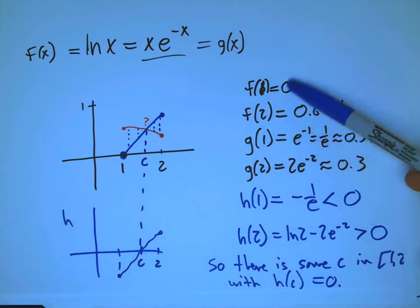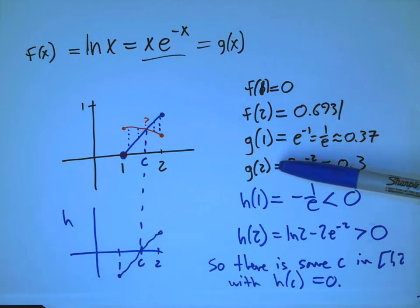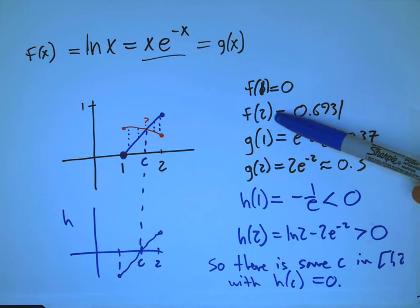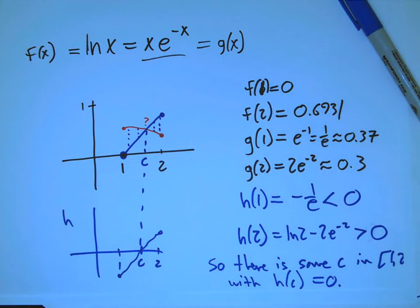And your problems for tonight are basically of this form. You need to find, you need to come up often with these numbers like the 1 and 2 here. They're not necessarily given to you, but you need to come up with those, find a sign change or find a crossing, and use the Intermediate Value Theorem to show what you need. Try it out.